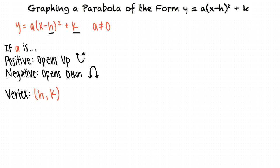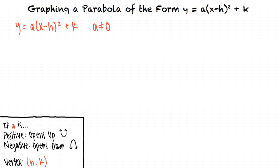The parabola will have a vertex at h comma k. So this form is useful for graphing, right? Exactly. Why don't we take a look at an example? Say we're given a parabola with an equation in the following form: y equals negative 3 times the quantity x minus 1 squared plus 5. We want to graph the parabola by plotting the vertex and four additional points, two on each side of the vertex.